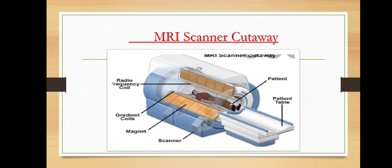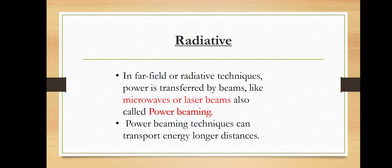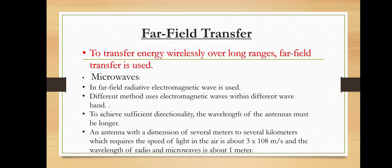This is the MRI scanner cutaway. Next is radiative. In far-field or radiative techniques, power is transferred by beams such as microwaves or laser beams, which is known as power beaming. Power beaming techniques can transport energy over long distances. For example, solar power satellites and wirelessly powered drone aircraft are proposed applications. Transferring energy wirelessly over long ranges is known as far-field transfer.